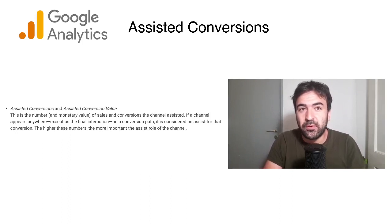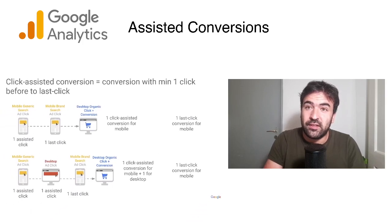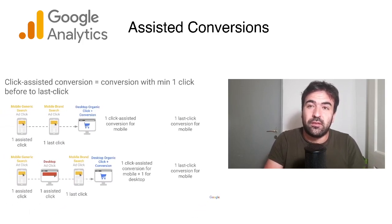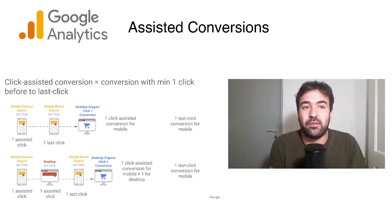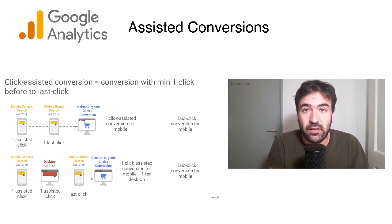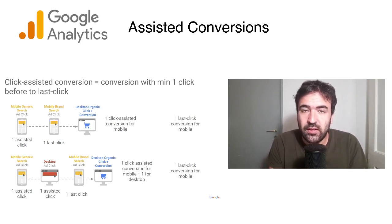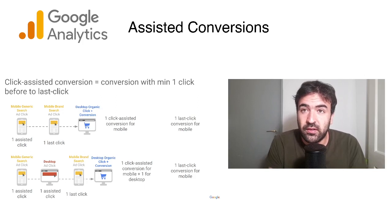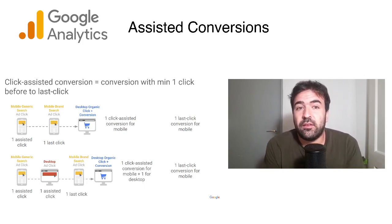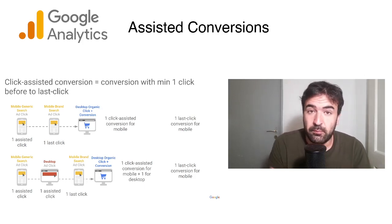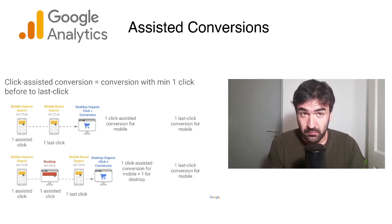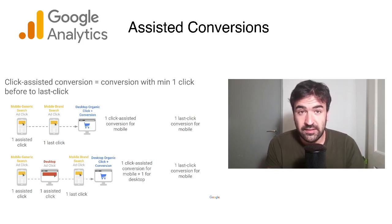I have an example that makes it very easy to understand. In this specific example, we have a three-step conversion journey where everything starts with a mobile ad click on a specific generic search campaign — so unbranded keywords — and this accounts for one assisted click from a Google Analytics standpoint. This is followed up by a mobile branded search campaign, perhaps because of brand recall. The person now remembers the name of the website, and it counts as a last-click conversion just before the final checkout procedure.